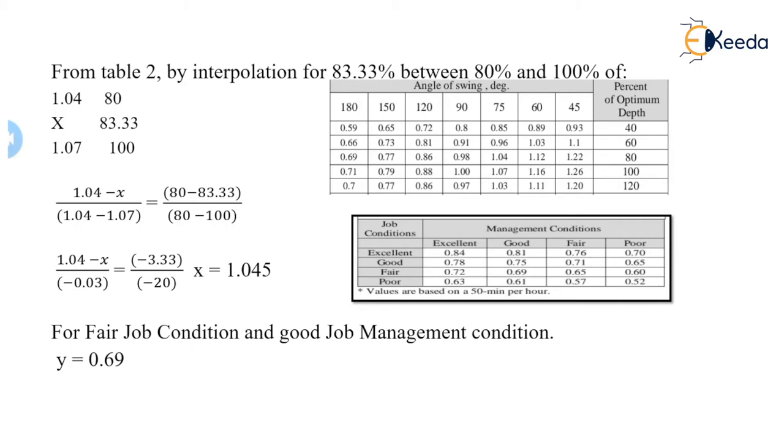And the value of x we have to calculate for 83.33%. So first we will take the first two rows: 1.04 minus x and 80, 83.33. Again, the first and the last row, that will be upon 1.04 minus 1.07 upon 80 minus 100. We will get the value of x as 1.05.